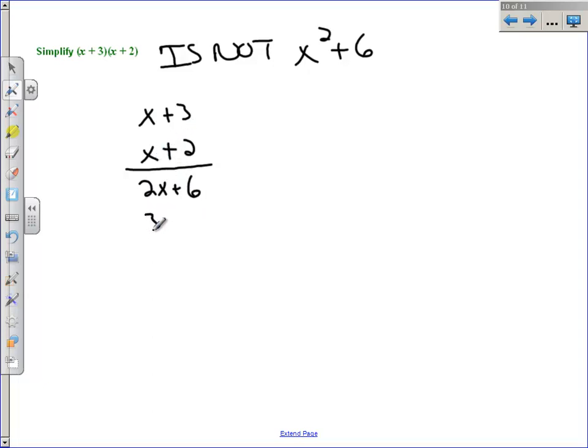x times 3 is 3x. And x times x is x². And then I'm just going to add them up, just like I'm doing a 2 digit by 2 digit. So I've got 6. I've got 5x. And I've got x².